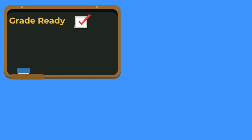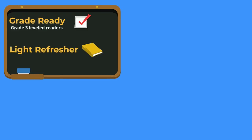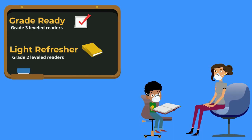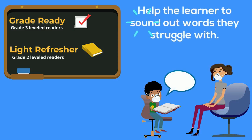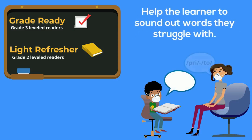Grade ready learners can use a grade 3 leveled reader, but learners in need of a light refresher should use a grade 2 leveled reader. Have the learner read the story aloud to you, and help the learner sound out the difficult words they struggle to read.